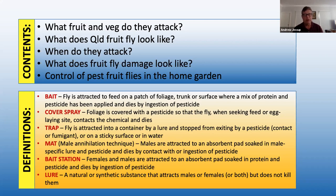With a bait station, you don't know if it's working unless you start getting fruit without fruit fly in it. A lure is simply something that attracts a fly to it. So basically we have a difference between things with lures that bring the fly to the toxicant, versus covering the whole area with a toxicant where the fly dies when it lands on it.